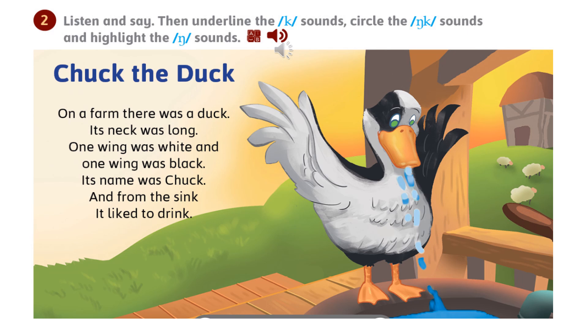In exercise number two, you have to find the words that contain the sounds we learned today. Listen and say, then underline the K sounds, circle the NK sounds, and highlight the NG sounds. Chuck the duck. On a farm there was a duck. Its neck was long. One wing was white and one wing was black. Its name was Chuck. And from the sink it liked to drink. Check your answers.